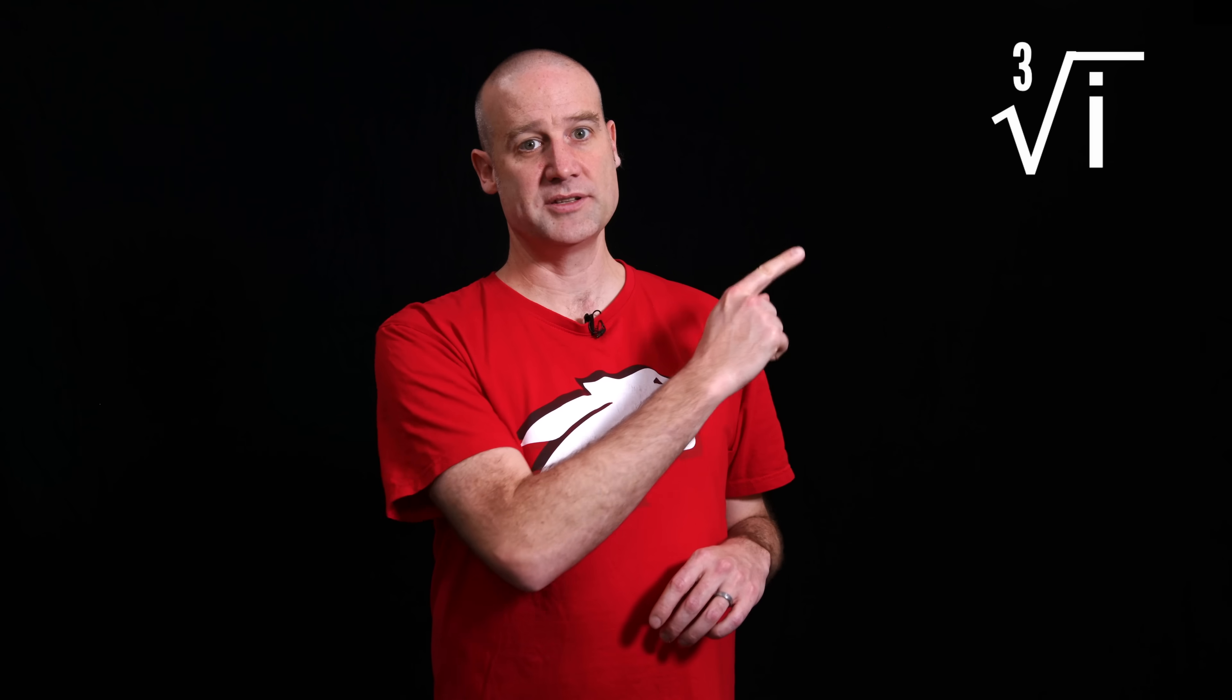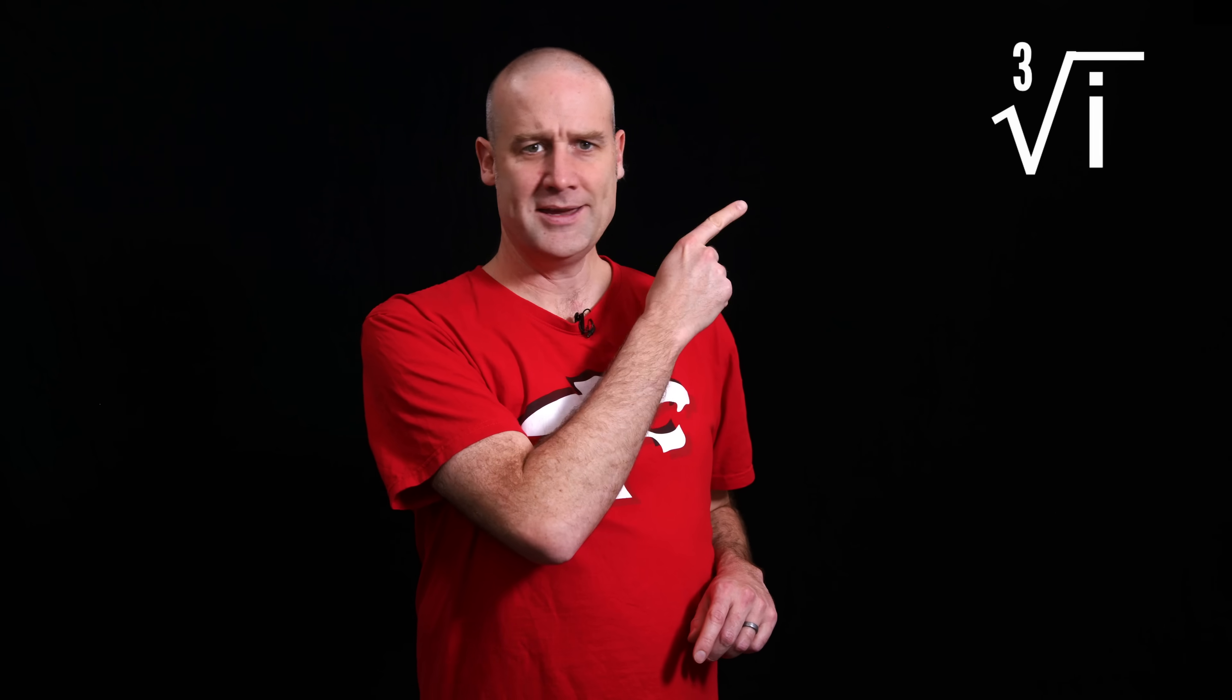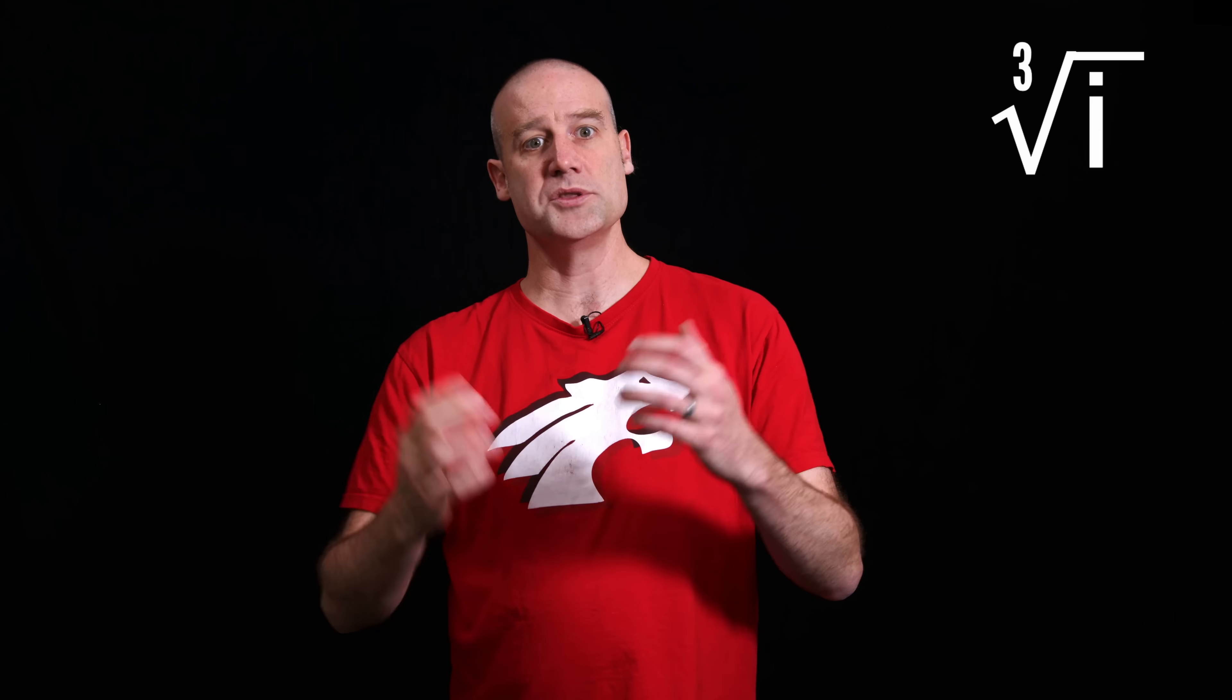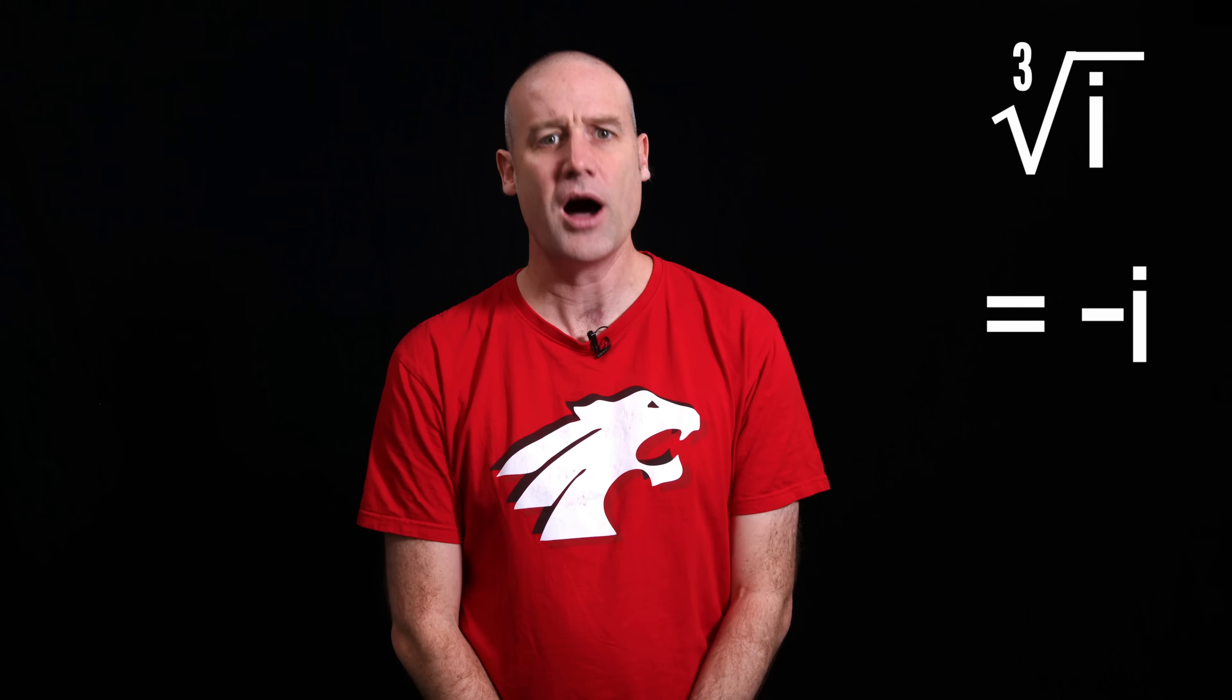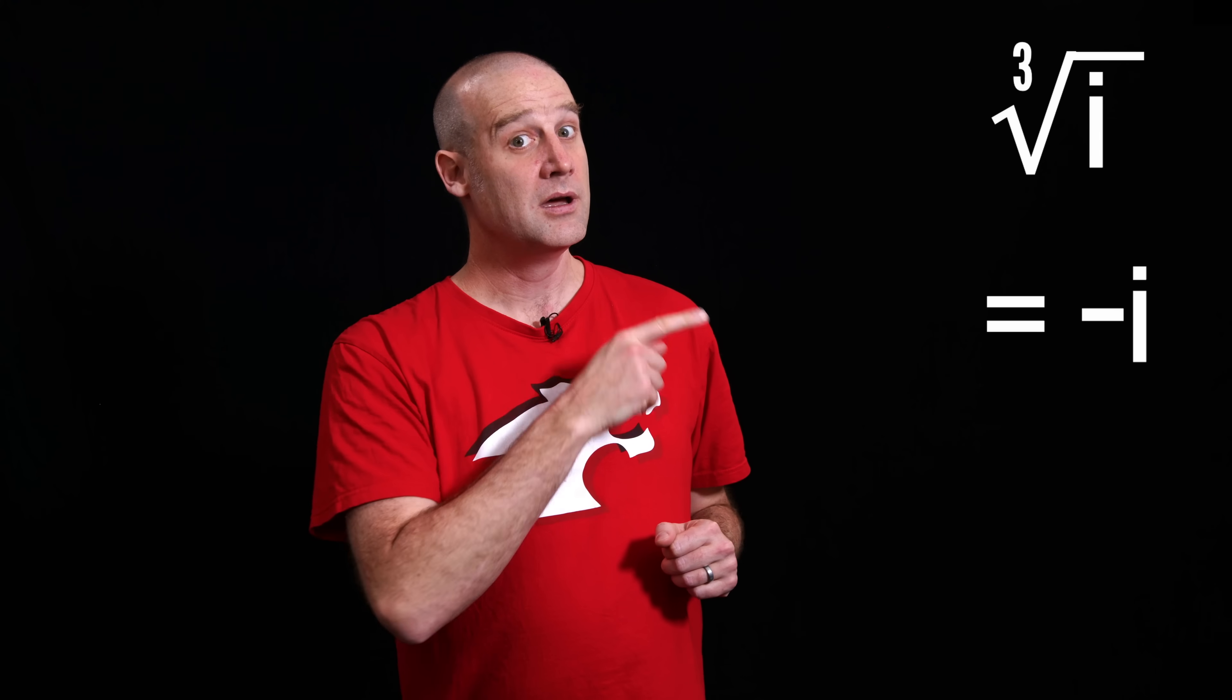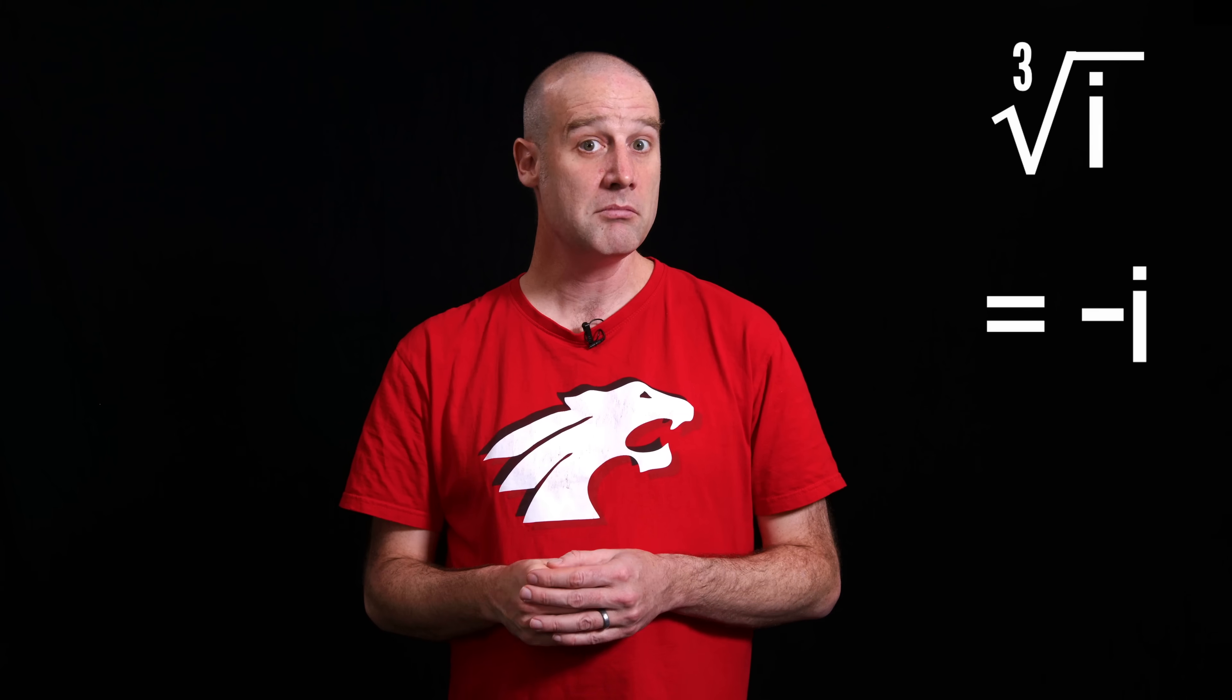Up next, we have the cube root of i, which presents us with two problems. First of all, how are we going to get an equilateral triangle out of that? And secondly, we already know what the cube root of i is. It's negative i. There's no root 3 on 2 to be seen, because you can check this. Negative i times negative i times negative i equals i.